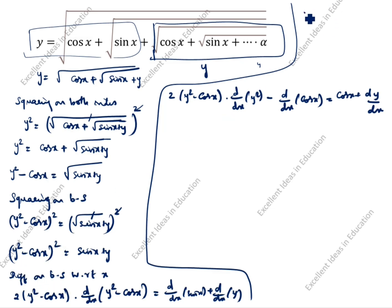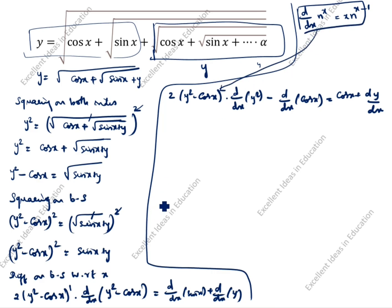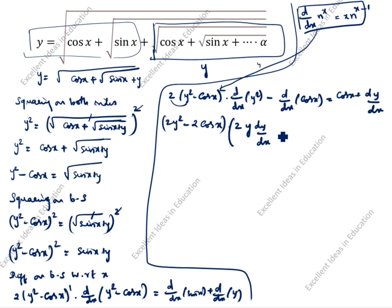Now, (y squared minus cos x) whole squared — applying d/dx of x^n = n·x^(n-1), so 2 minus 1 is 1, giving power 1. So multiplying inside the bracket: 2(y squared minus cos x) into (2y dy/dx minus d/dx of cos x). The derivative of cos x is sin x, so minus sin x, equal to cos x plus dy/dx.